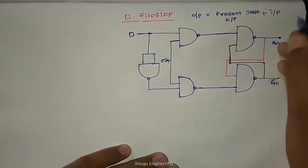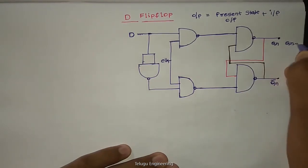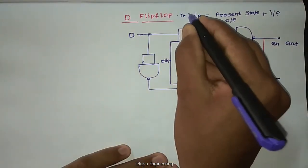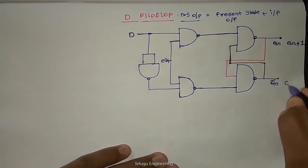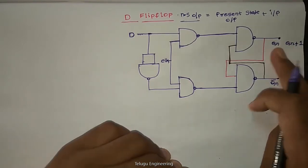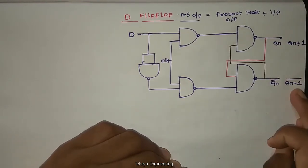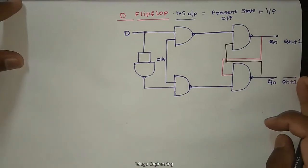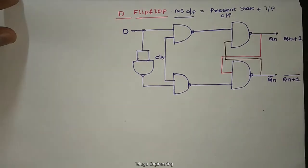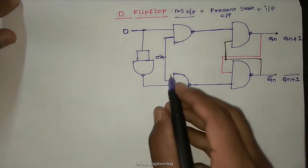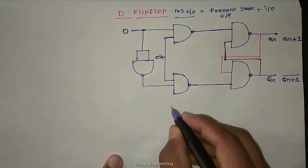Now you have here next state output. So next state output Qn+1. That means toggle is complement here: Qn, Qn+1, Qn bar, Qn+1 whole bar. So now we have clock high as well we have different inputs which we have to use, this is our D flip-flop.